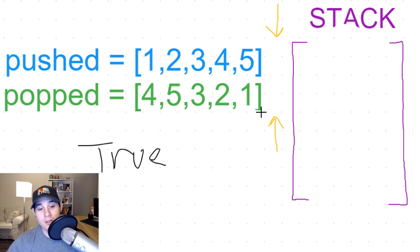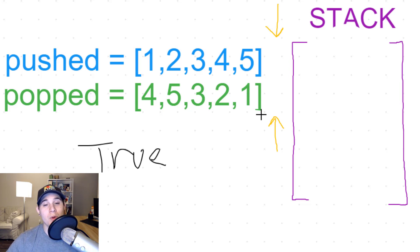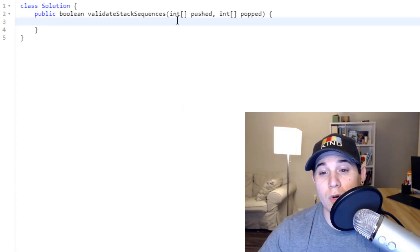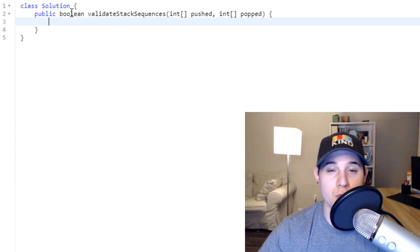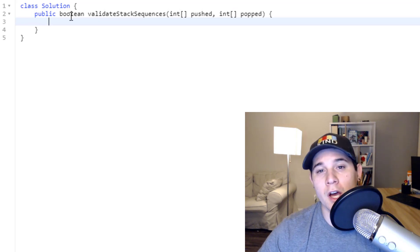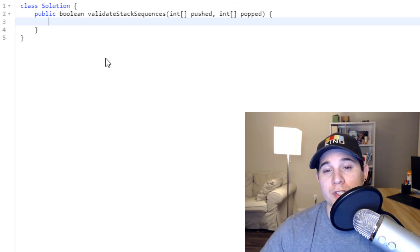Since we've exhausted every element in pushed and popped and our stack is empty, we return true. If we did not look through every popped element or push every element successfully, we would return false. We're given two arrays, pushed and popped, and we return a boolean indicating whether all operations can be performed successfully.